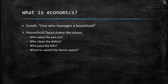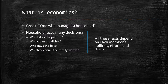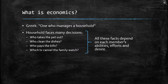For example: who takes the pet out, who cleans the dishes, who pays the bills, which TV channel the family watches. All these facts have something in common — they depend on each member's abilities, efforts, and desires. So all these important decisions inside a household depend on each member.